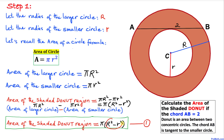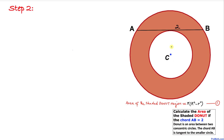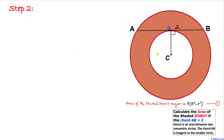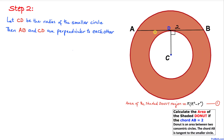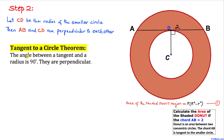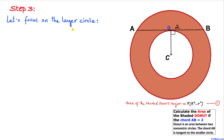In the next step, let's connect the center C with the point of tangency, which we'll call D. We can see that CD is the radius of the smaller circle. By the tangent-to-a-circle theorem, the tangent AB and radius CD are perpendicular to each other — the angle between a tangent and a radius is always 90 degrees.